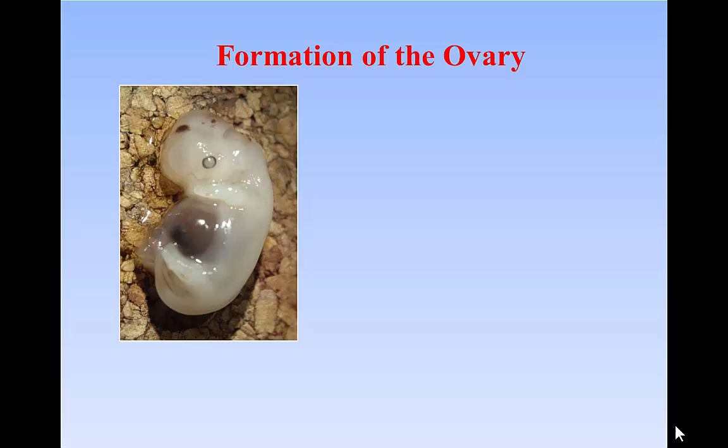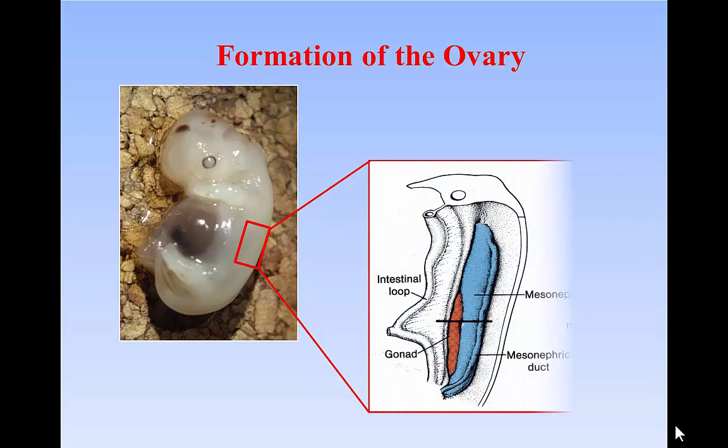It is well known that the ovary arises from the genital ridge which develops on the surface of the mesonephros. The mesonephros is a fetal kidney which subsequently regresses but contributes ducts to the reproductive organs, particularly in the male.